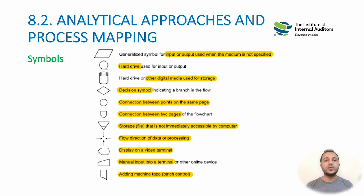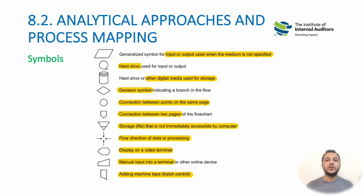An inverted triangle represents a storage file not immediately accessible by computer. Arrow keys reflect how data flows within the process. A display or video terminal symbol shows where video instructions appear in a process. There are also symbols for manual terminal input and for adding machine tape or batch control within a production system.